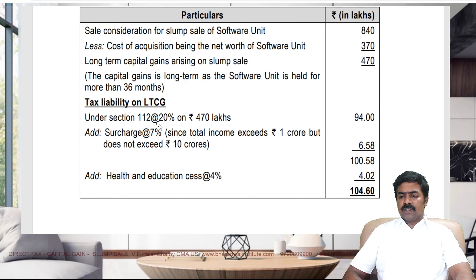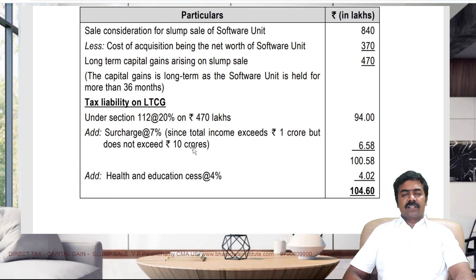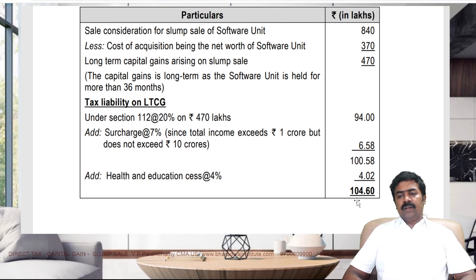470 lakhs into 20% gives 94 lakhs tax on long-term capital gain. No expense on sale is given. For a company, if income exceeds 1 crore but does not exceed 10 crore, surcharge is 7%. So 94 lakhs into 7% = 6.58 lakhs, giving 100.58 lakhs. HEC at 4% is applicable. This gives the total tax liability. Sale consideration minus net worth gives LTCG taxed at 20%, plus surcharge 7%, plus HEC 4%. For intermediate students, assessment of company may not be relevant, but for final level it is.